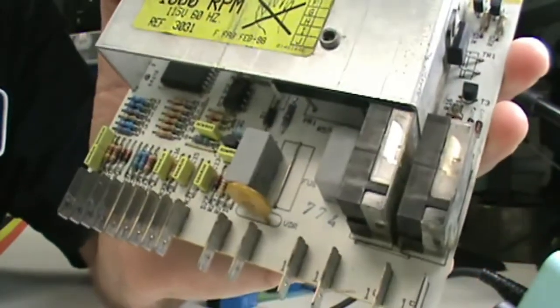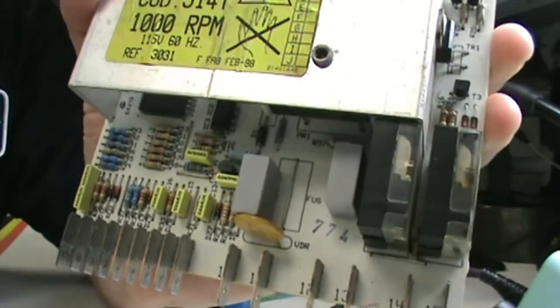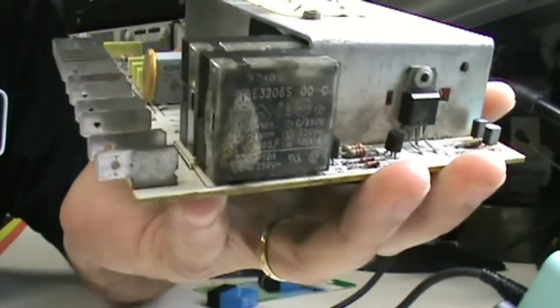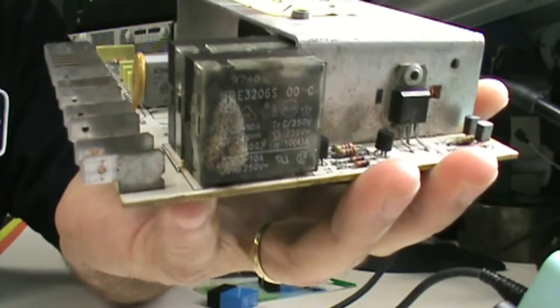So the complaint was that this guy's washer was not cycling properly. I'm absolutely sure the reason is this relay is arc welded. So first we'll measure it and then we're going to change it out.